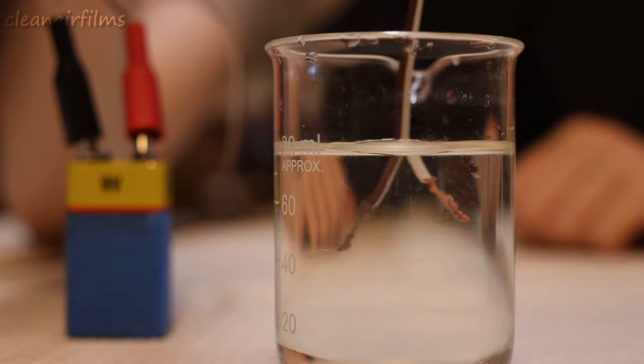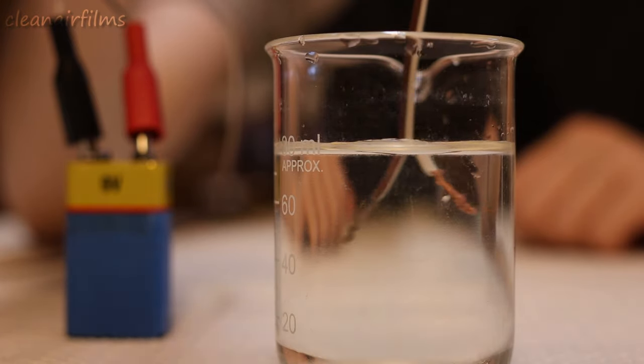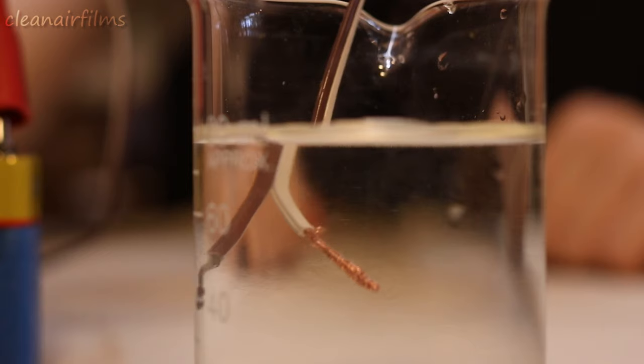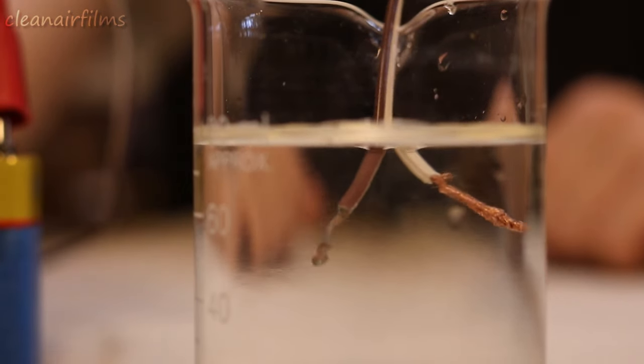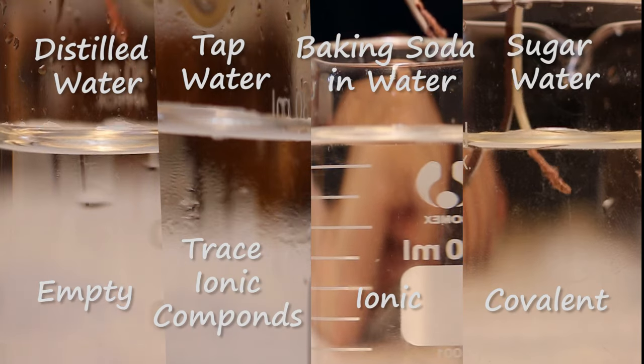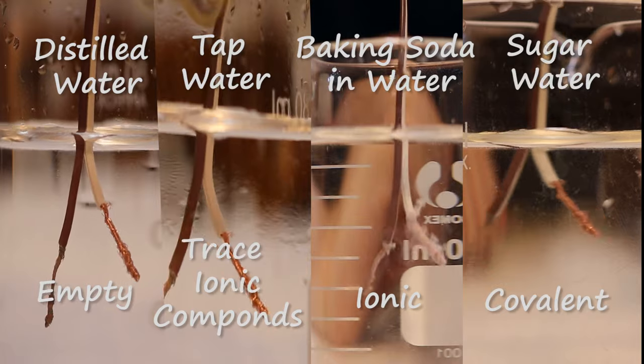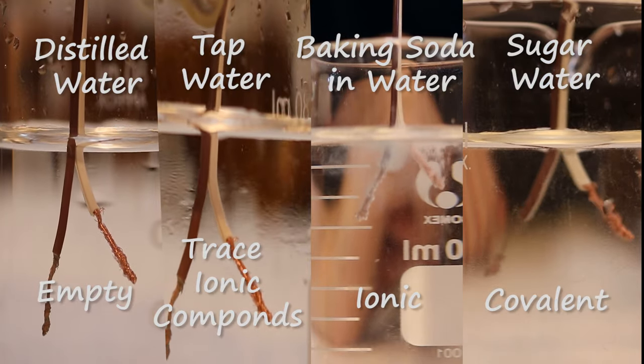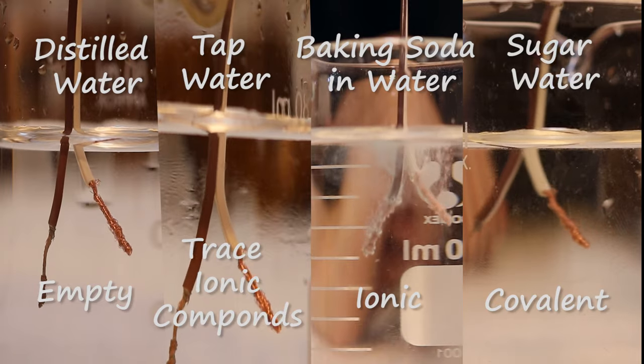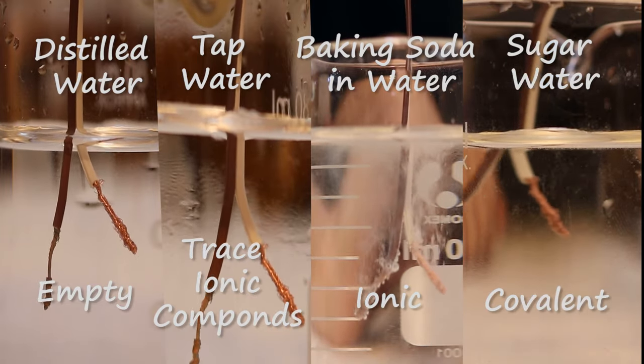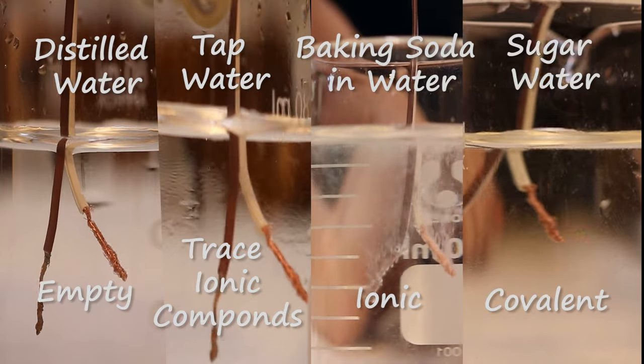In this test with the sugar, no gas bubbles are forming on the end of the wire. This shows that sugar dissolved in water does not conduct electricity. This is because sugar is a covalent compound. Covalent and ionic compounds behave differently when they are dissolved in water. Ionic compounds disassociate into their individual ions. This is what allows water to conduct electricity. The sugar is a covalent compound, which does not disassociate into ions.